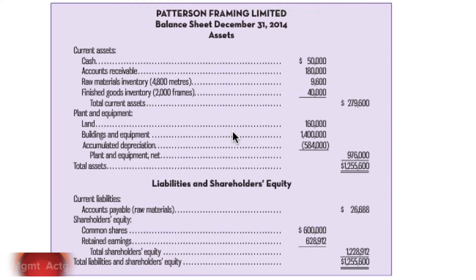We're going to walk our way through the budget schedules for the master budget. Before we start, we have to start with the balance sheet for the company we're going to use throughout this chapter — Patterson Framing. Here's their balance sheet for December 31st, 2014. We're going to need this because there are some amounts here that become our balance forward for some of the different schedules. Cash, accounts receivable, raw materials and finished goods inventory, and accounts payable will all become important.